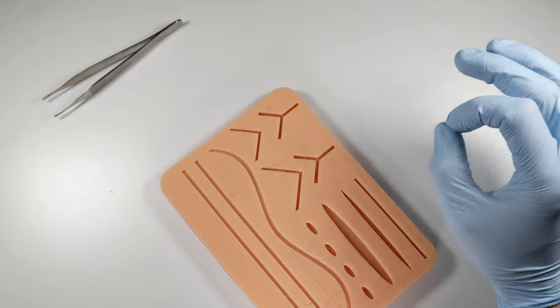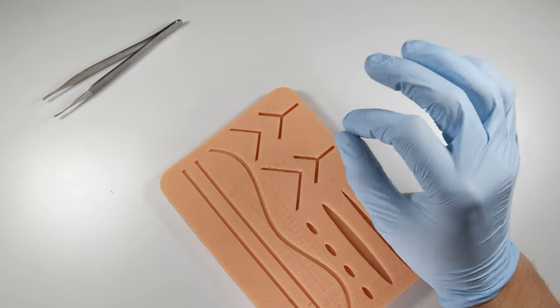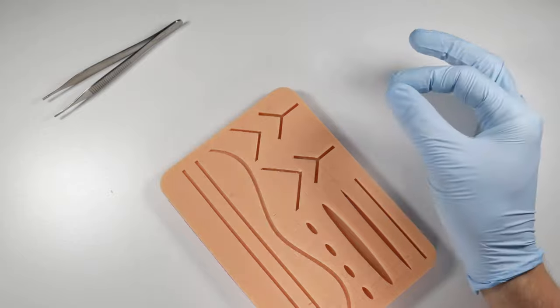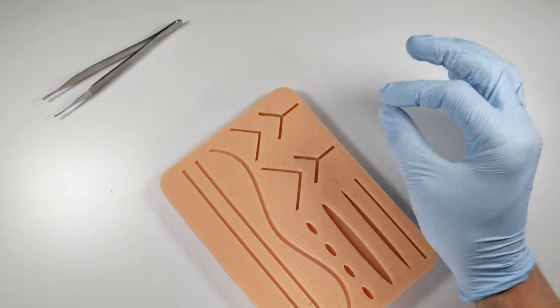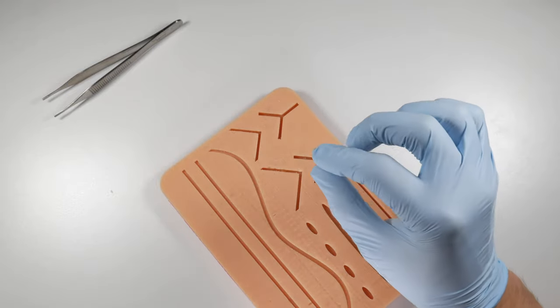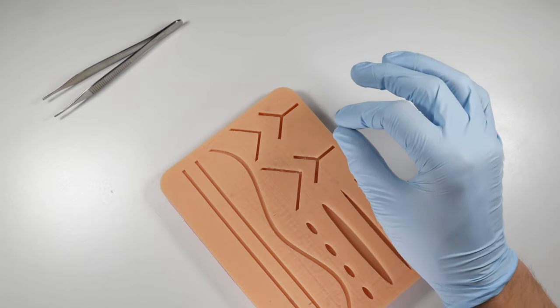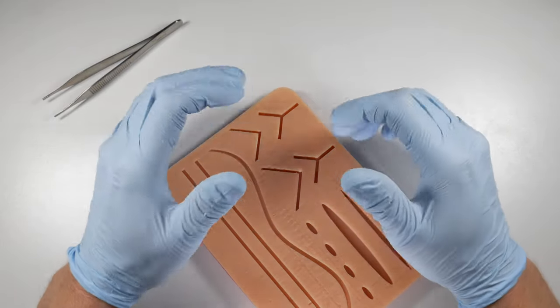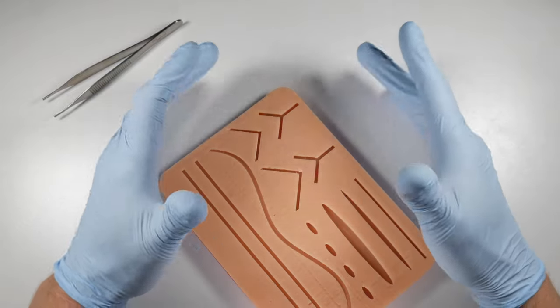The smaller the suture, the more delicate the suturing. So if you have a torn flap for example, you might want to use a 6-0 or a 5-0 suture that's going to be much finer than say a 3-0 suture that you may use normally for good strength to resist the tissue pull in an area where you've done a surgical flap.